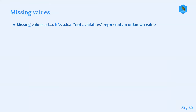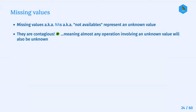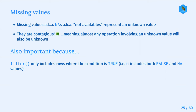Missing values, also known as NAs or 'not availables', represent an unknown value. They're also contagious, meaning almost any operation involving an unknown value will also be unknown. When you use the filter function, it only includes rows where the condition is true - it excludes both false and NA values.